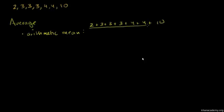All of that over, how many numbers do I have? 1, 2, 3, 4, 5, 6, 7. All of that over 7. And what is this equal to? This is 2 plus 9, which is 11, plus 8, which is 19, plus 10, which is 29. So this is going to be equal to 29 over 7, or you could say it's equal to 4 and 1 seventh. If I got my calculator out, we could figure out the decimal of this.